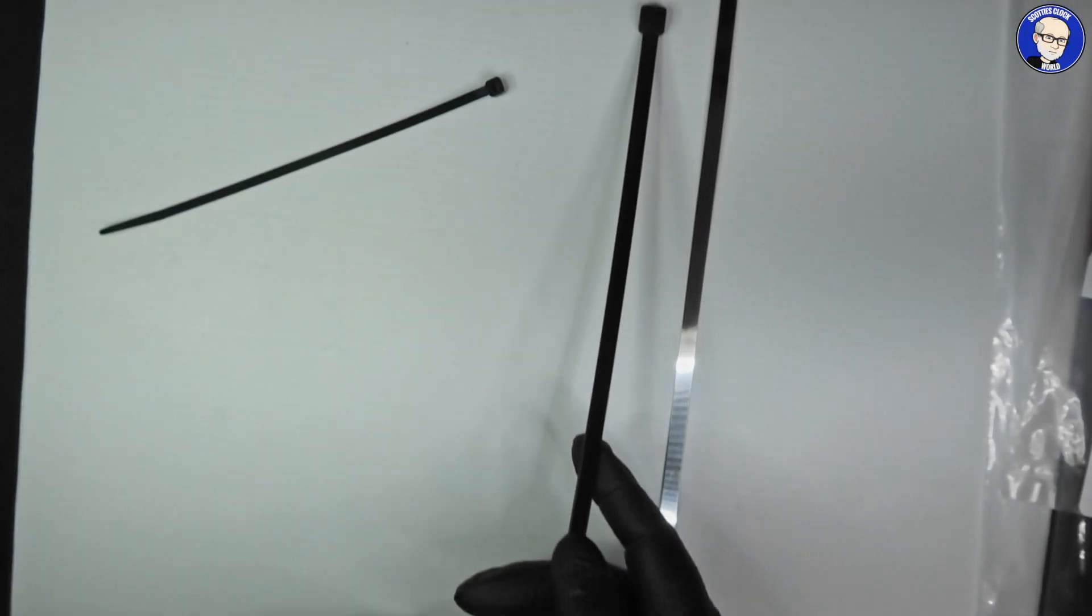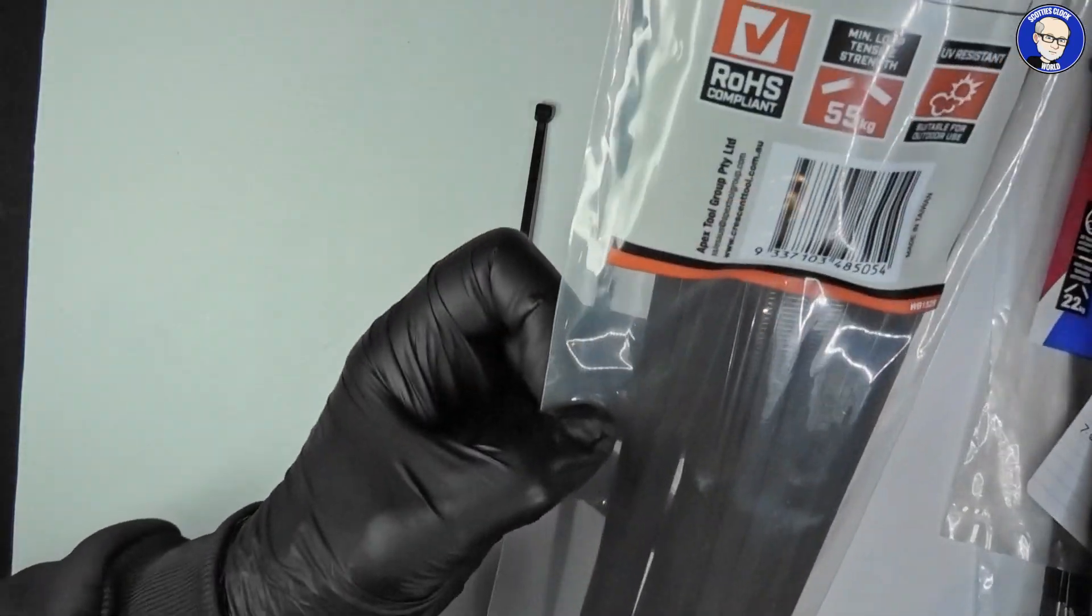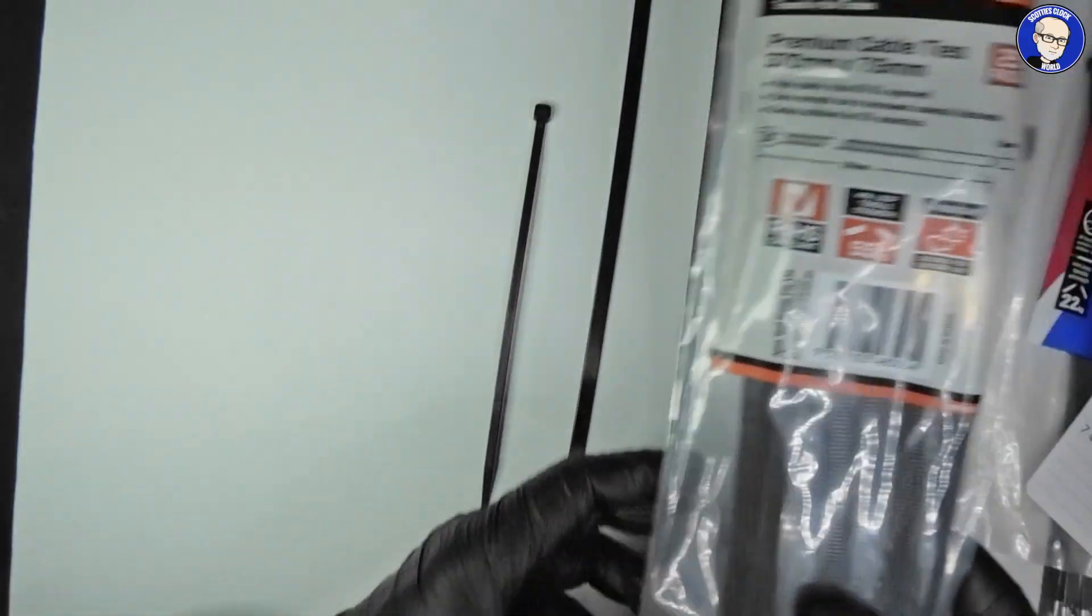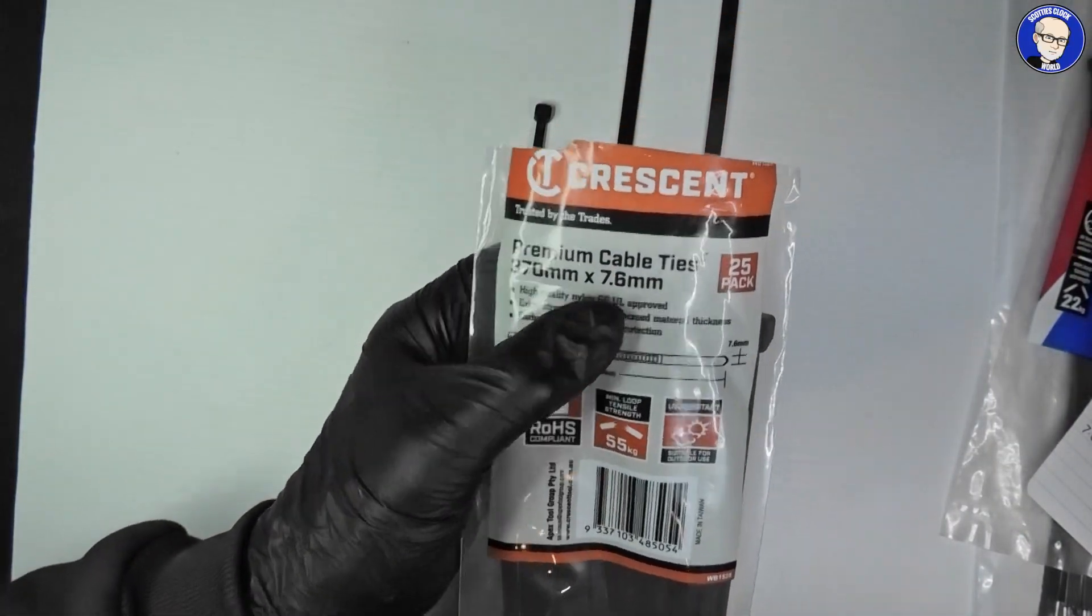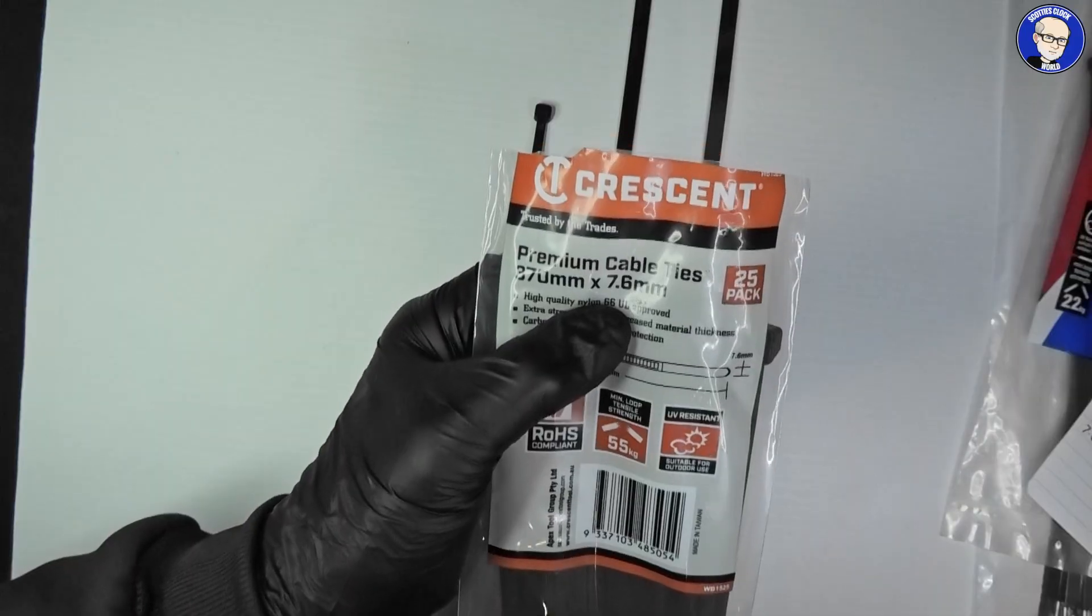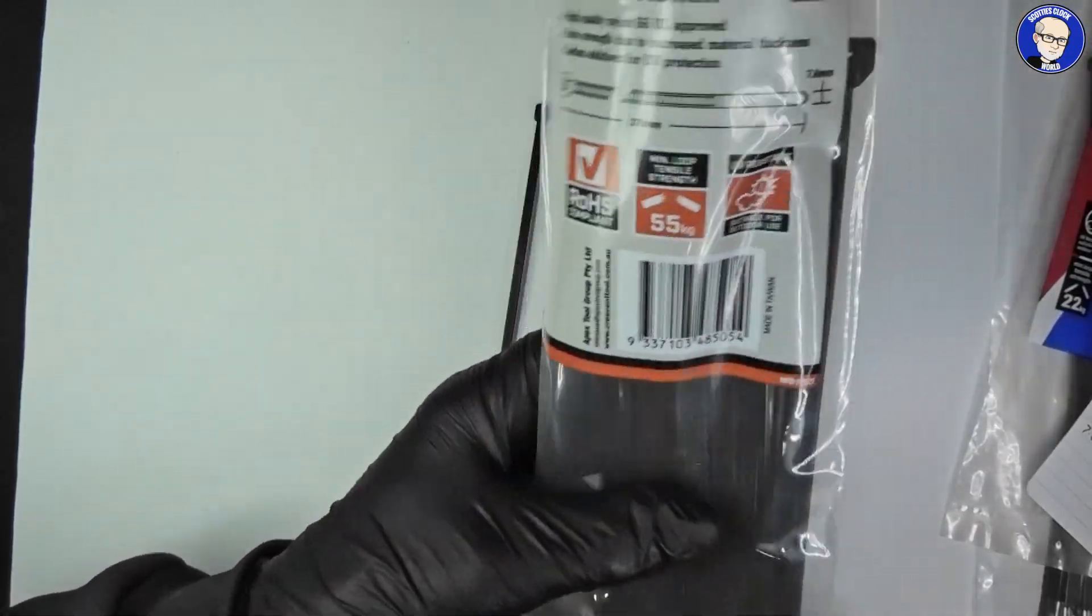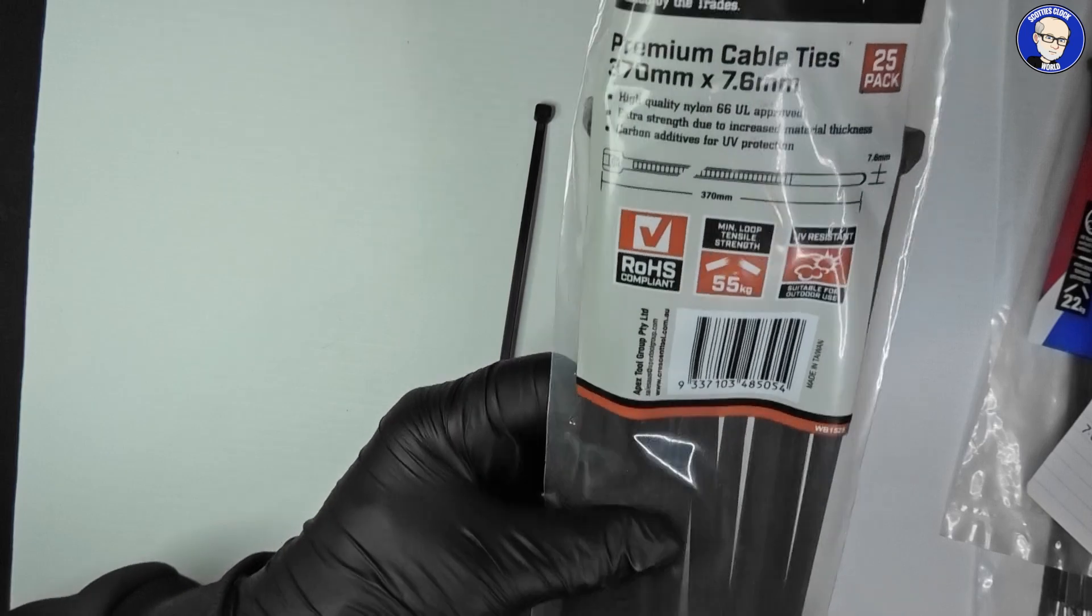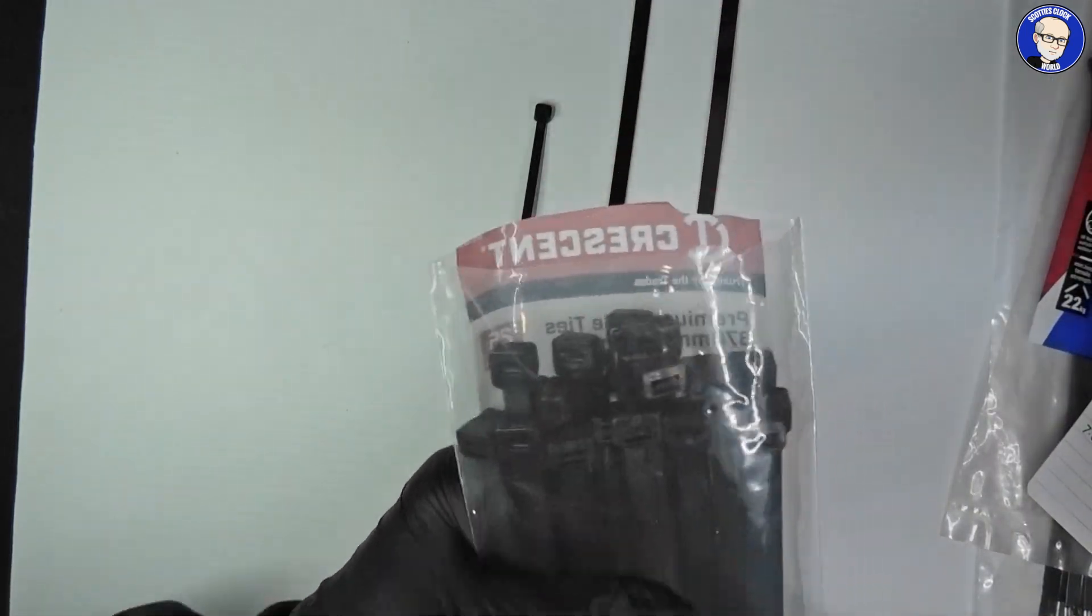They're not particularly expensive. I've got a packet here that's 370 millimeters long, 7.6 millimeters wide, packet of 25, and I think that was about ten dollars Australian. They're in excess of what I need. You only ever need two or four in your kit to make sure that you're covered.